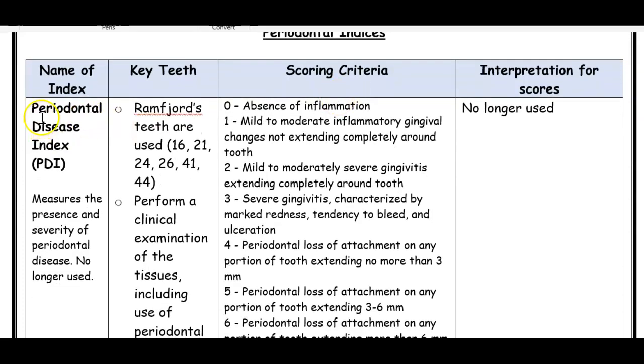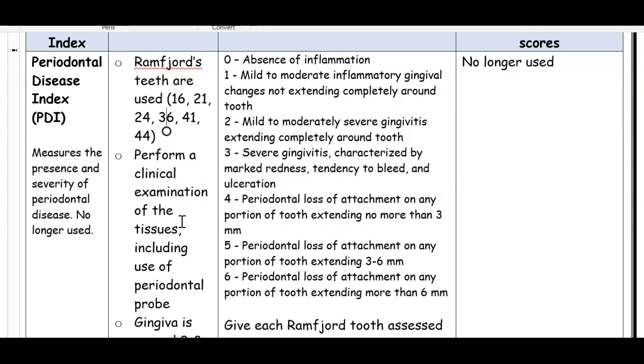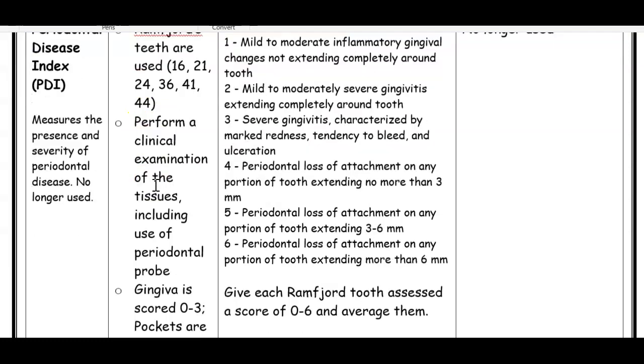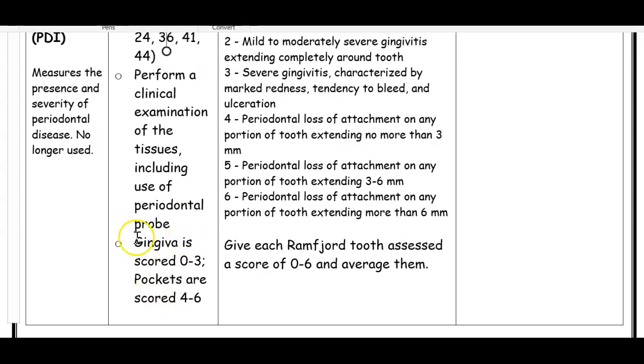The first one is PDI, Periodontal Disease Index. This is no longer used, so I don't want you to worry too much about it. The way they used to do this was they used Ramfjord's teeth. The teeth are listed here. They would assess the teeth by looking at what the gums looked like, and they were also looking at the pockets, how deep they were, and whether there was any calculus.